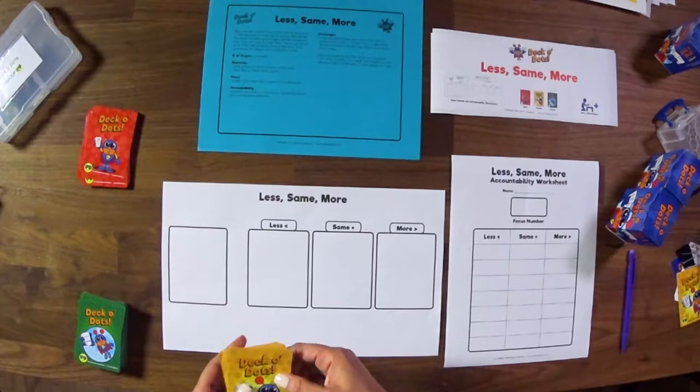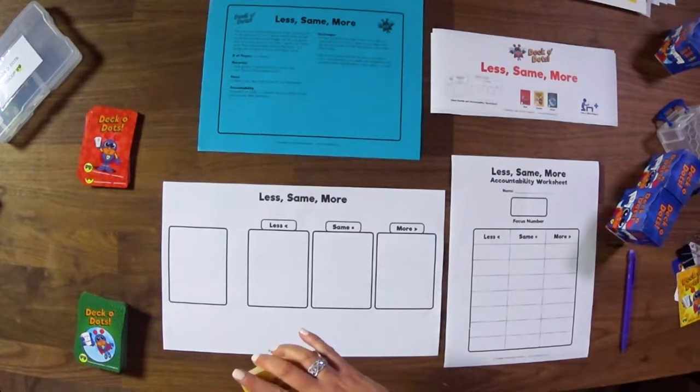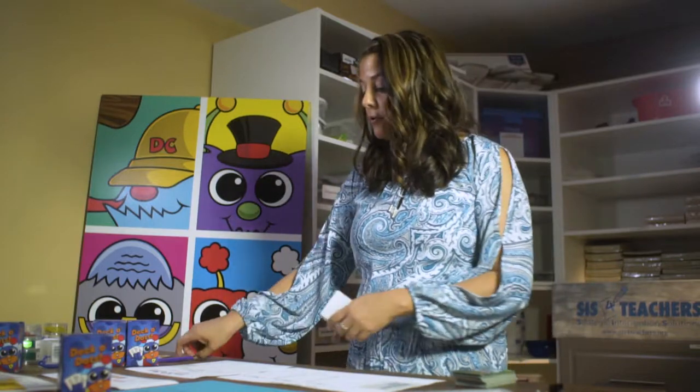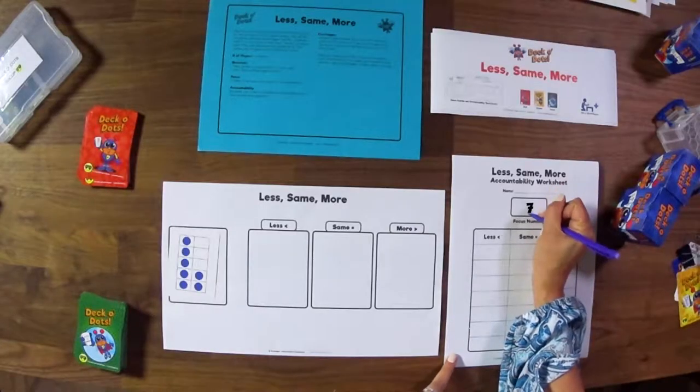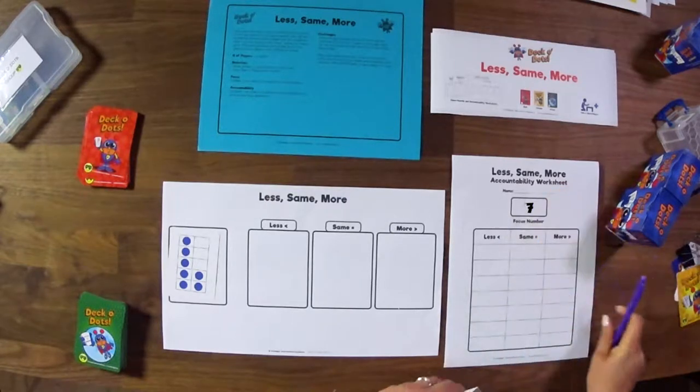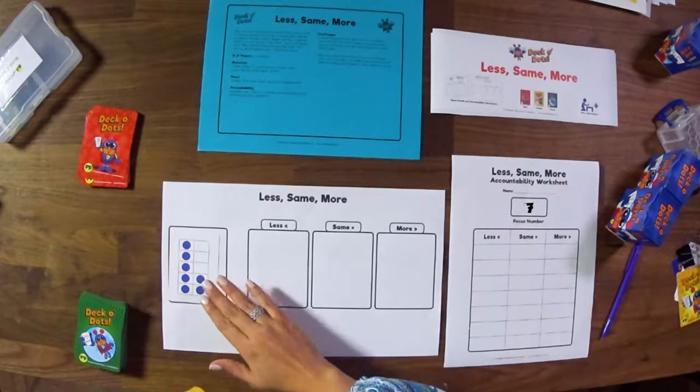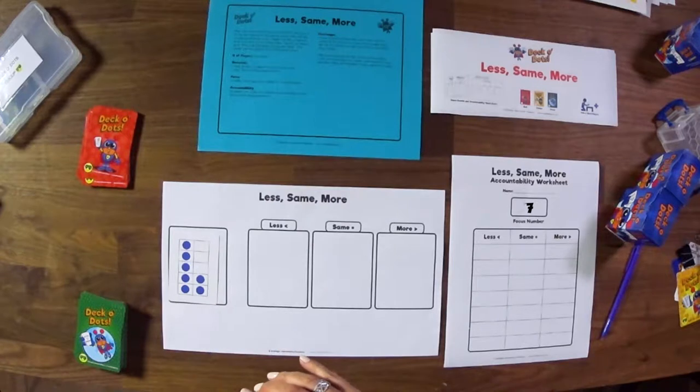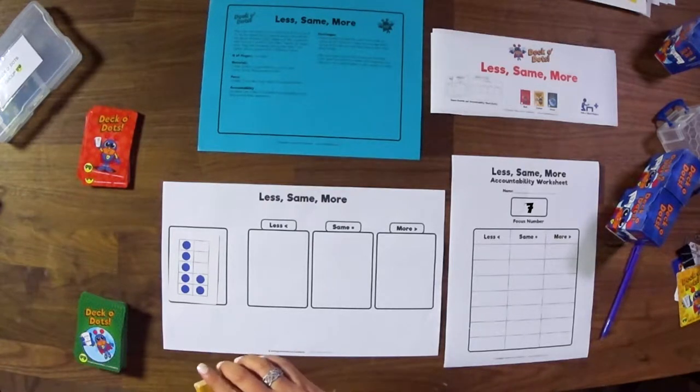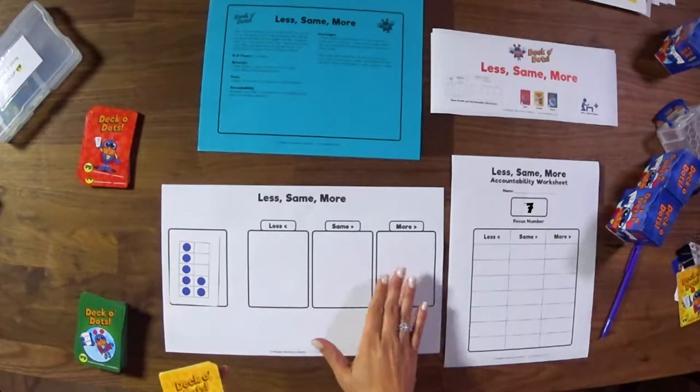There's also the accountability sheet and then deciding which color deck they're going to be in. For this example, I'm going to show it in the yellow deck which is our 10 frame deck to get the idea. We're going to come up with a focus number that we've selected which is going to be 7. So I'm going to put my focus number on my sheet here to show that we're looking for numbers of 7.